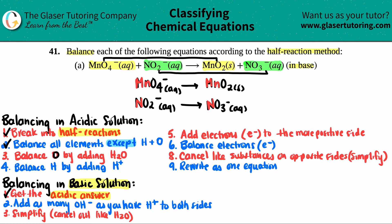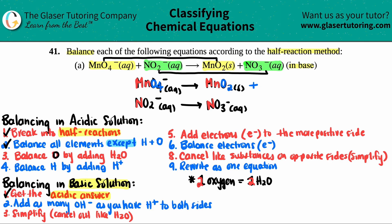Now let's balance the oxygens. We balance oxygens by adding H2O — if you need to add one oxygen on any side, you add one H2O; two oxygens, two H2Os; three oxygens, three H2Os. For the first half reaction, I have four oxygens on the left but only two on the right, so I need to add two more on the right side. That means two H2Os, giving two plus two equals four oxygens.